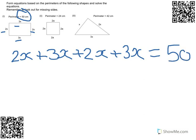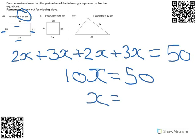So we've formed an equation. We need to simplify this. So that would be 10x equals 50. So x equals 5cm in this case.